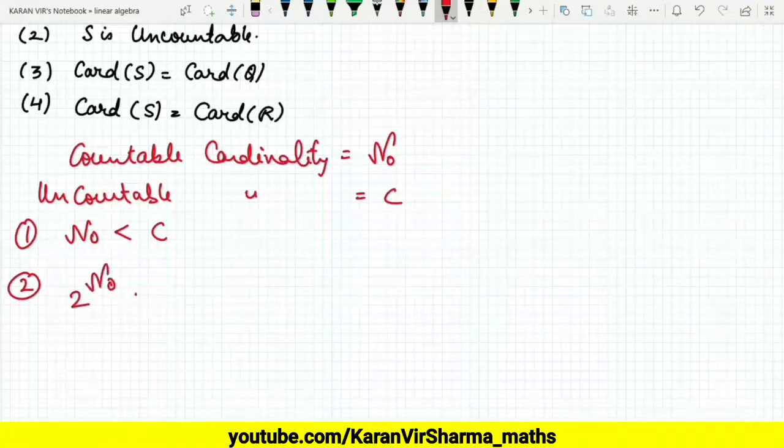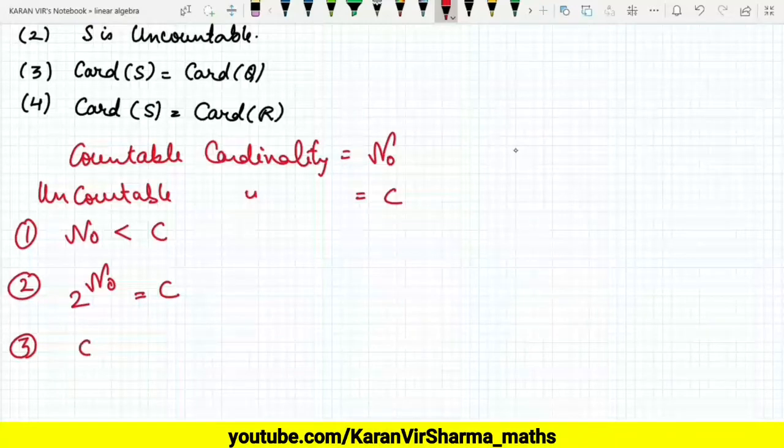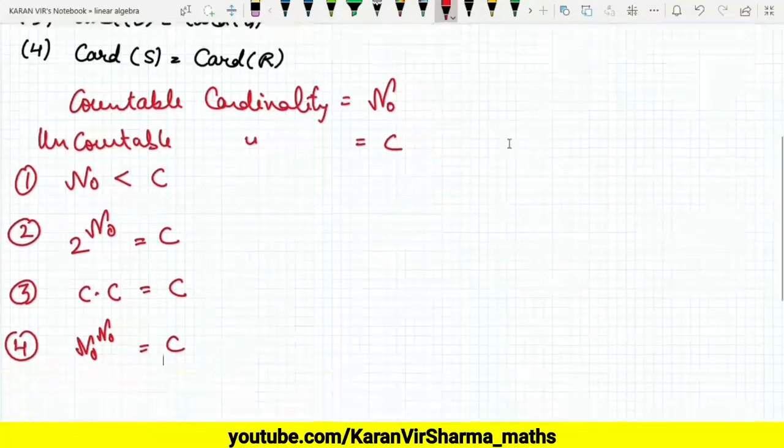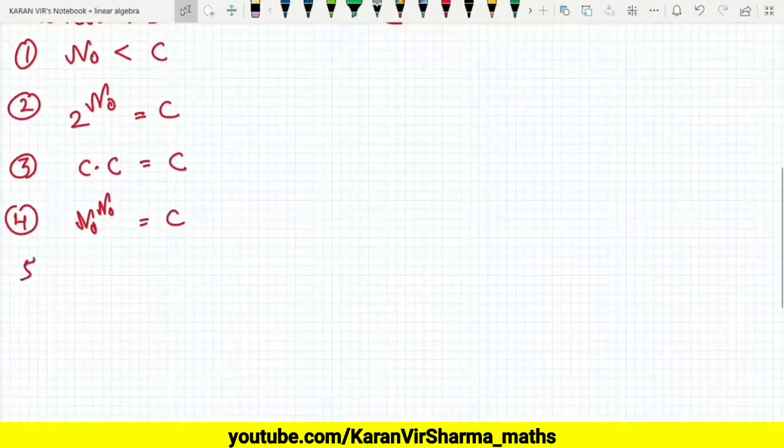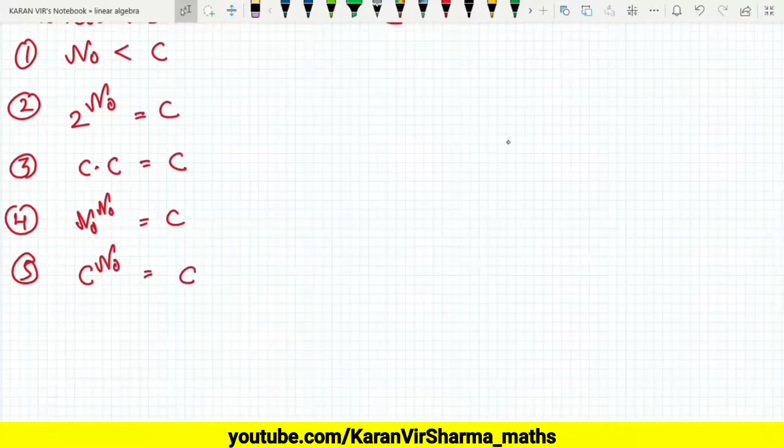Third is continuum times continuum is continuum. Fourth, aleph-naught raised to power aleph-naught is again continuum. And the last one is continuum raised to power aleph-naught is again continuum. Now since we are given the set S.